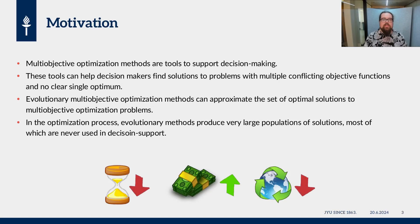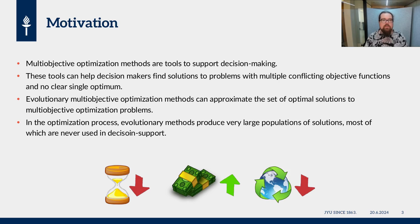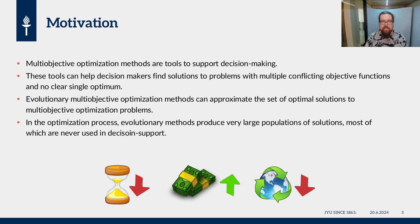Multi-objective optimization methods can address problems with multiple conflicting objective functions that are to be optimized simultaneously. Because they are conflicting, we cannot find one optimal solution to these problems; instead we end up with multiple so-called Pareto-optimal or non-dominated solutions. These solutions cannot be fully ordered mathematically alone, and it is usually up to a decision maker — a domain expert — to identify the best solution, which is often subjective.